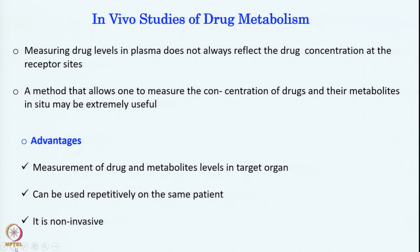These experiments can be done if we actually do the in vivo study of drug metabolism. The good part of in vivo study is that measurement of drug and metabolites can be done in the target organ wherever the drug is going — it can be directly measured from there. Another good part is that it can be repeatedly done on the same patients, so reproducibility and batch-to-batch variation can be accounted for. And this is non-invasive: you are not taking anything out of the body, just using an NMR-based probe in a non-invasive manner to detect drug concentration at the site of its action.